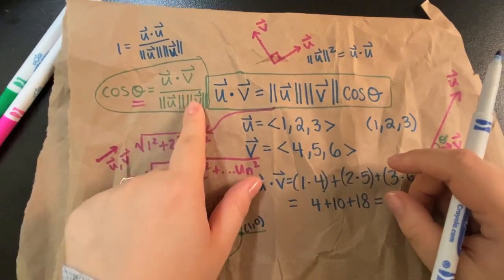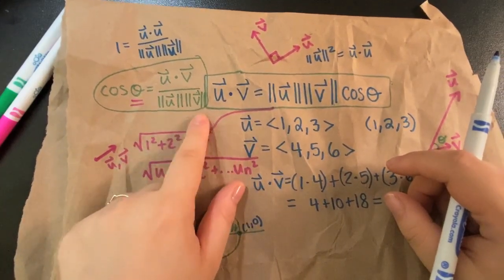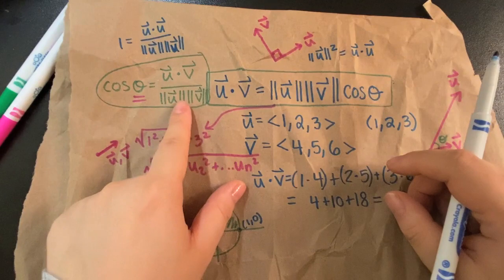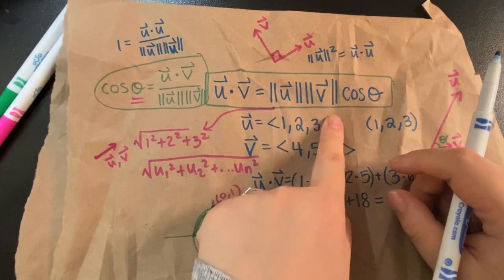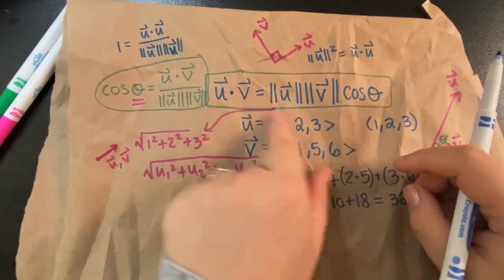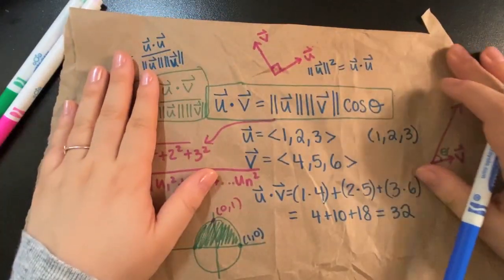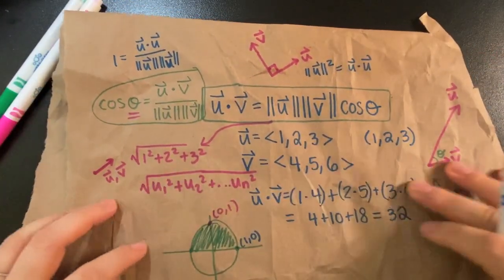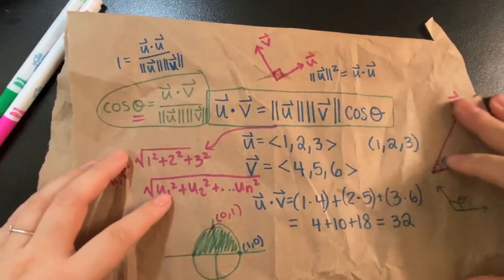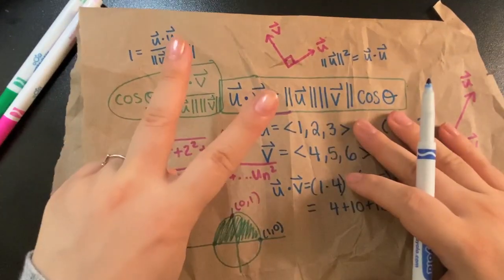So all you have to do is dot them, and then divide by the magnitudes of each multiplied together, or just this formula. Okay. So, I will see you around for warm out very soon. Thanks for hanging out with me, and take good care. Peace.